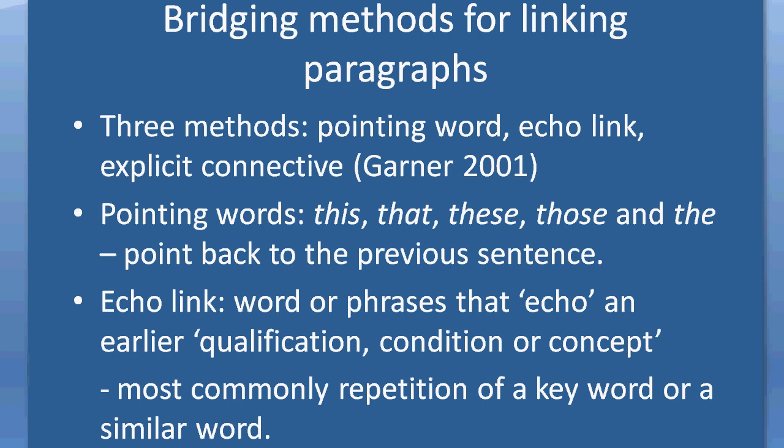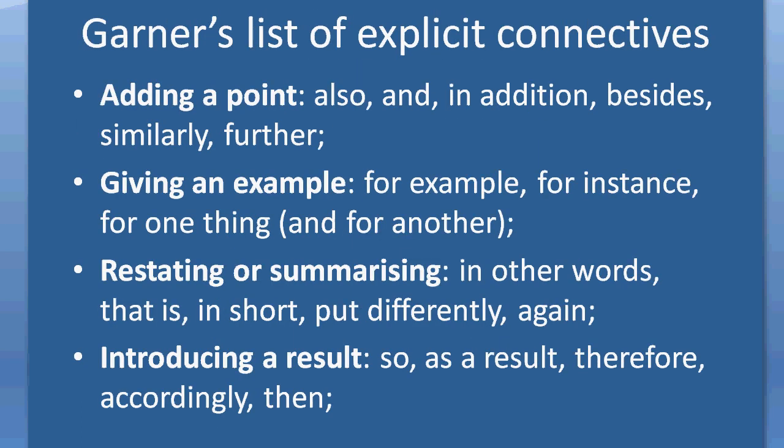Something that students sometimes have difficulty with are explicit connectives. Garner groups them into several types. You can add a new point at the beginning of a paragraph — adding something further to an existing argument. Words you might use for that effect are: also, in addition, besides, similarly, further. I'd be cautious about opening a paragraph with the word 'and' — that's still frowned upon in contemporary correct grammar.